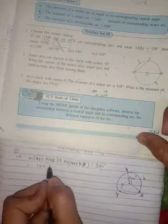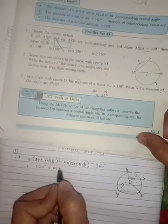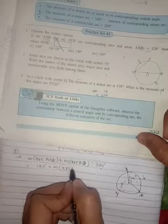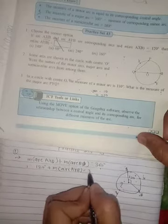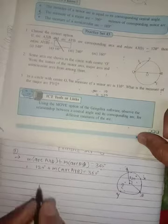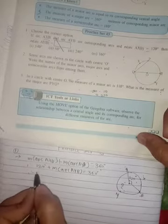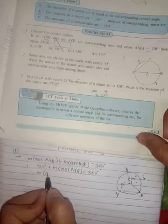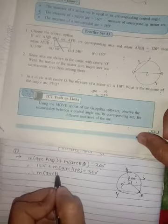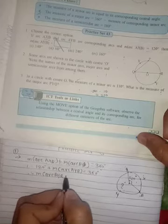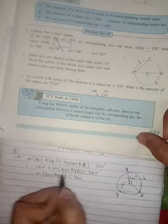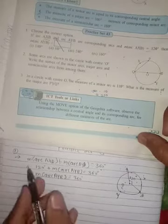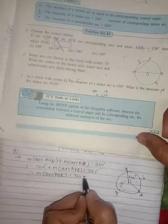So it is 120 degrees plus measurement arc AYB equals 360 degrees. Therefore, let's find out measurement arc AYB. If we transfer this 120 to this side, it comes in a negative sign, so it is minus 120 degrees.